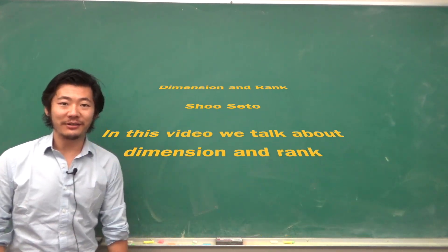In this video we will talk about dimension and rank. First recall that a basis is a set of vectors that are spanning the subspace and also the vectors are linearly independent.